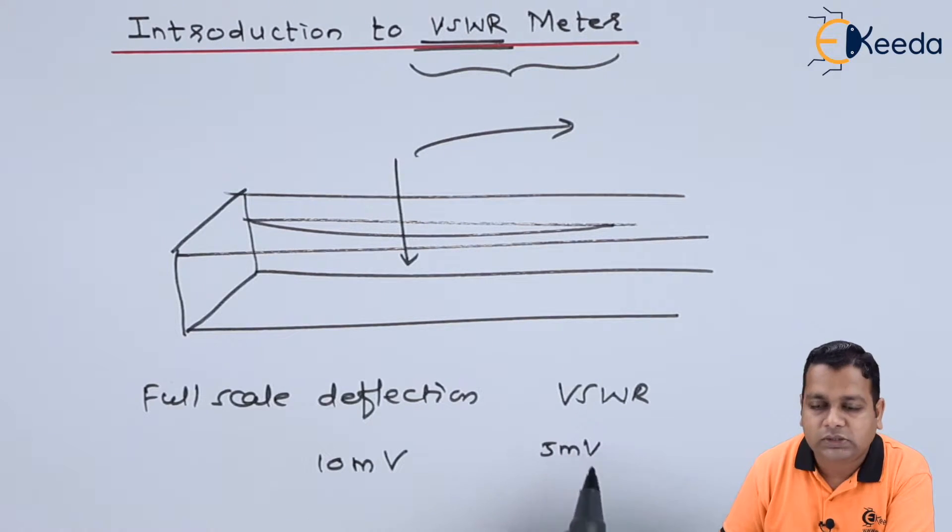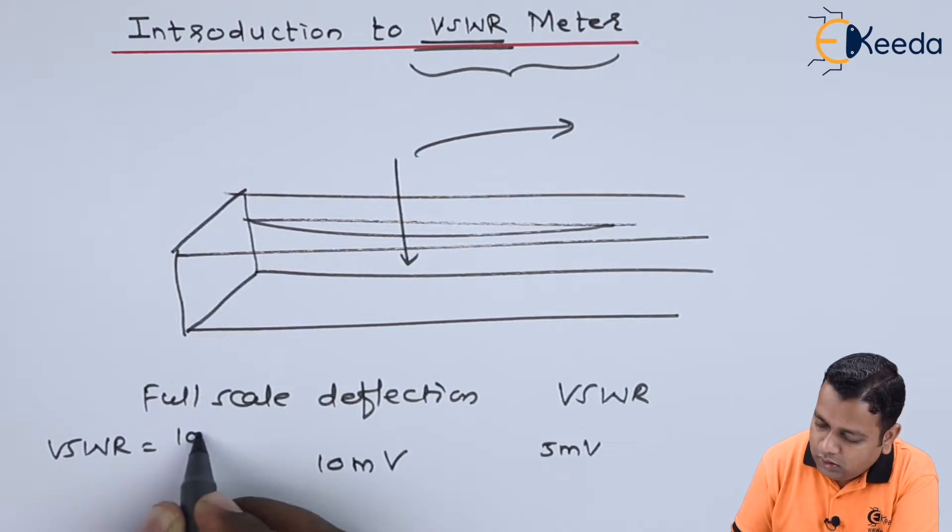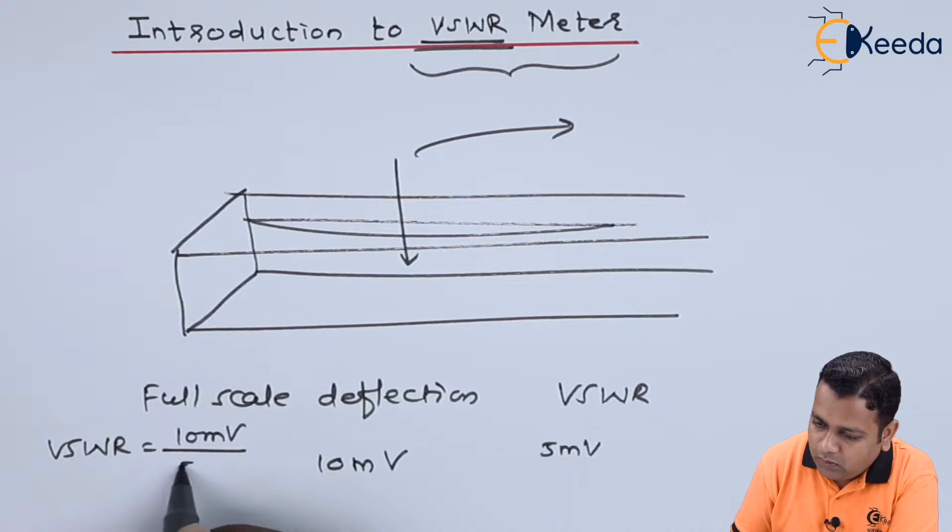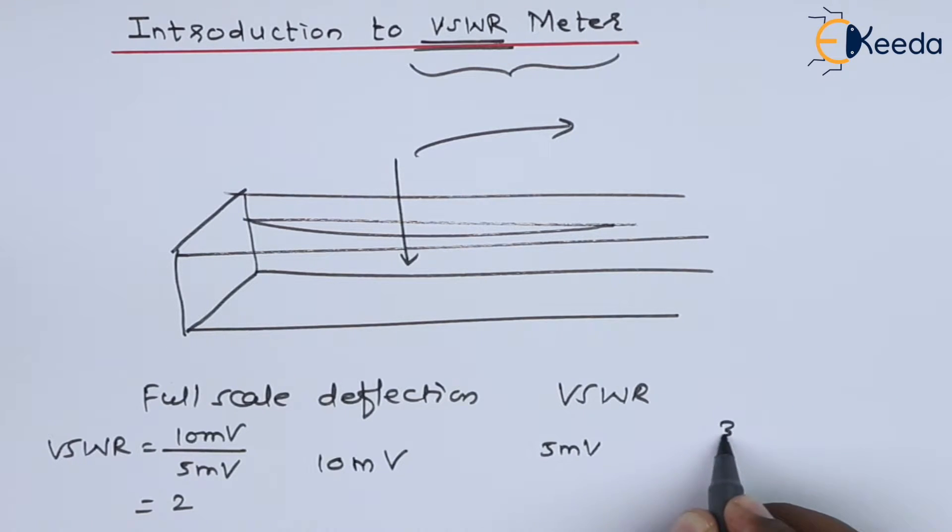We have to take the ratio of VSWR equal to 10 millivolts divided by 5 millivolts, so the VSWR will be equal to 2. When we come to read the value of the voltage level to be for example 3.33 millivolts, that time we take VSWR equal to 10 divided by 3.33, so this gives us the VSWR equal to value 3.